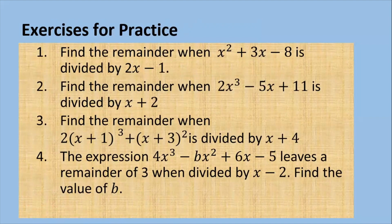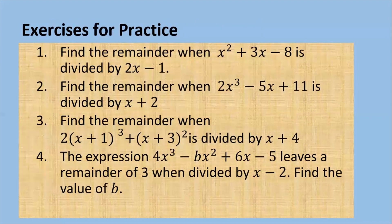Here are exercises for you to practice. Question 1: find the remainder when x squared plus 3x minus 8 is divided by 2x minus 1. Be careful — 2x minus 1 equals 0 gives x equals one half, so you need to find p of one half. Question 2: find the remainder when 2x cubed minus 5x plus 11 is divided by x plus 2. Question 3: find the remainder when 2 times (x plus 1) cubed plus (x plus 3) squared is divided by x plus 4. Question 4: the expression 4x cubed minus bx squared plus 6x minus 5 leaves a remainder of 3 when divided by x minus 2; find the value of b.